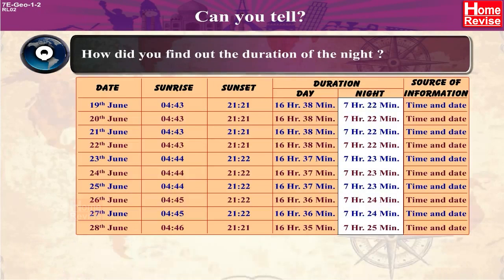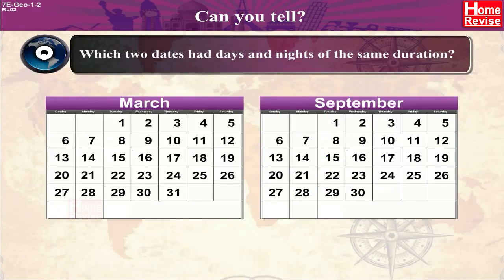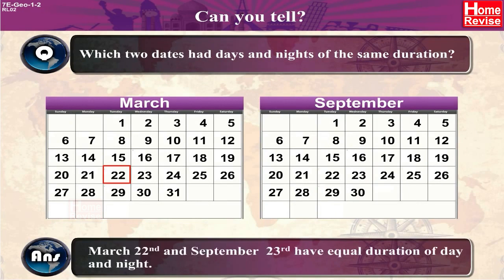Question: How did you find out the duration of the night? Answer: The duration of the day is subtracted from 24 hours to get the duration of the night. Question: Which two dates had days and nights of the same duration? Answer: March 22nd and September 23rd have equal duration of day and night.